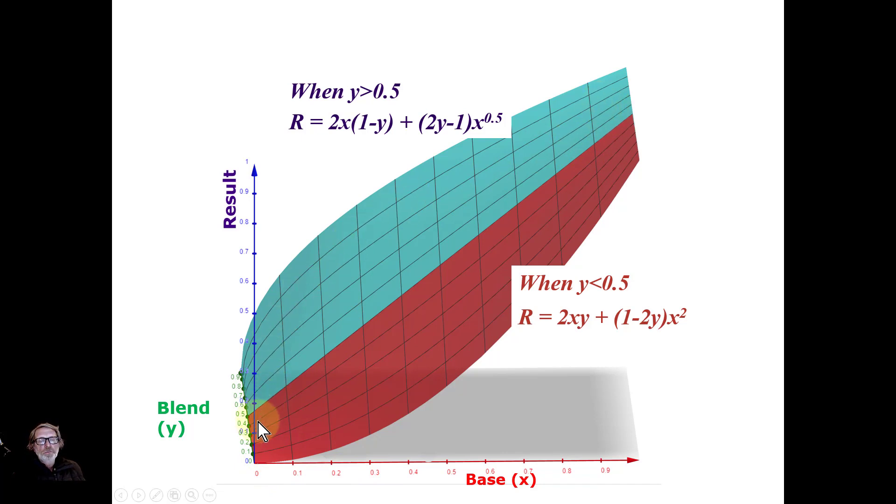So we've got a smooth surface. It's got a smooth transition. But now the curve goes this way. As before. But there, it goes up more down towards the blacks rather going up towards the whites. And that's how we make the soft light blend mode.